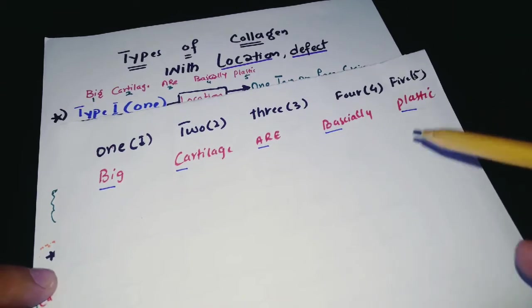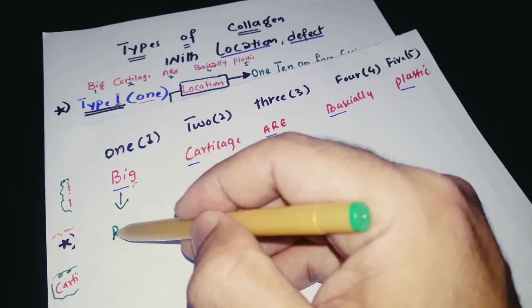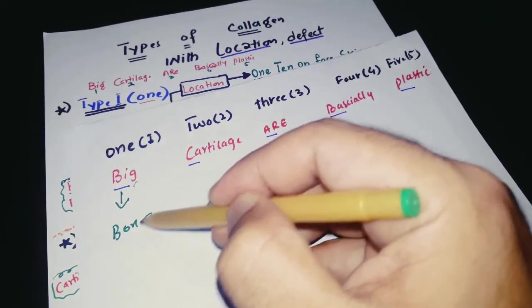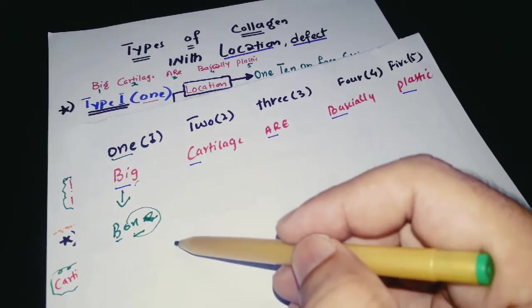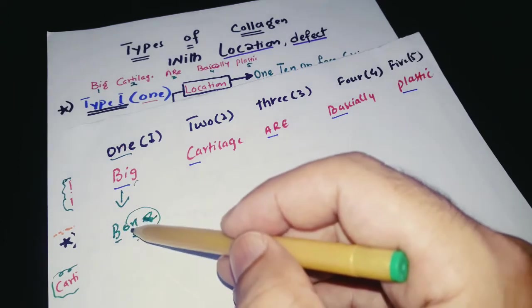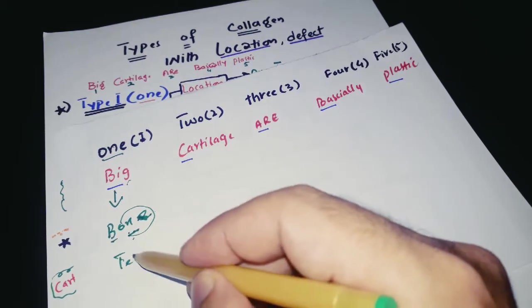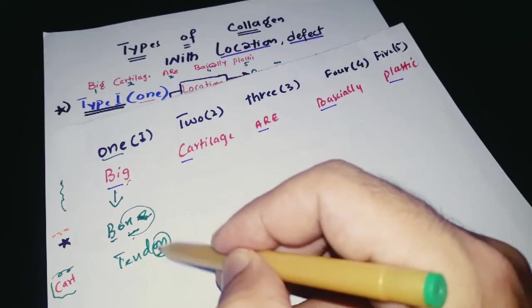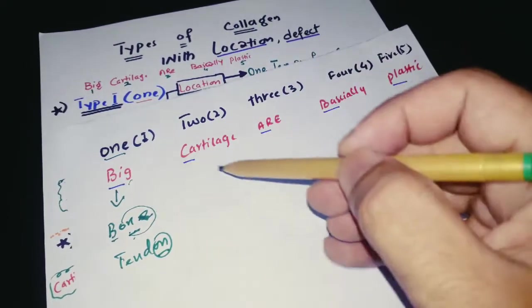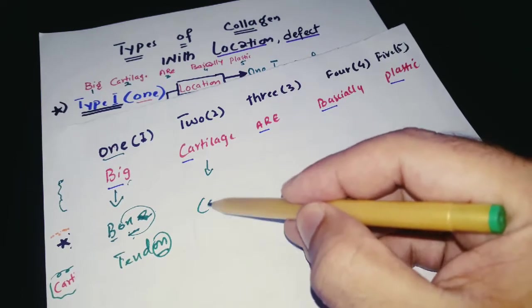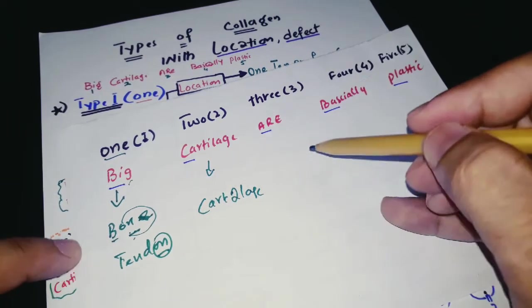From 'Big,' you will remember Bone — both share the letters O-N-E, helping you remember Type 1. In Bone there is also Tendon, so 'one' connects to both Bone and Tendon. And from 'Big' you will also remember that Type 2 is Cartilage.